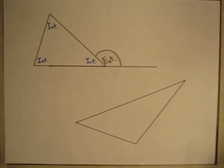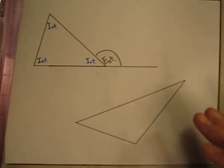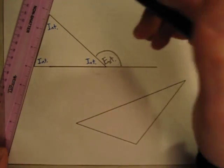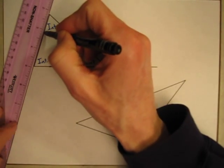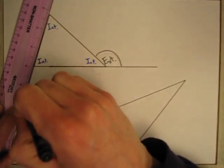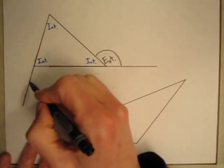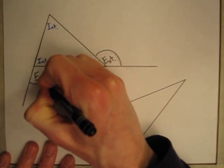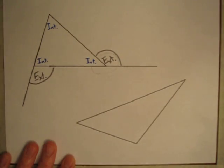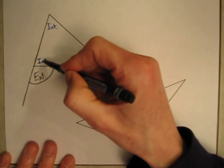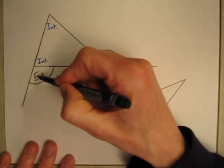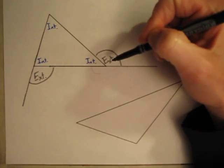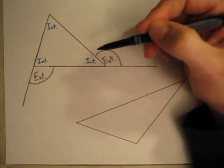I can do the same thing again. If I extend another side going this way, this angle out here is an exterior angle. We've got an interior adjacent to an exterior — the interior angle is adjacent to this exterior angle, and they share this side in between them.